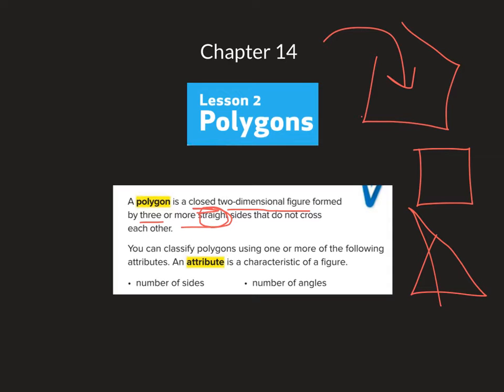You can classify polygons using one or more of the following attributes. So what's an attribute? An attribute is a characteristic of a figure. For example, if I said my hair is curly, that would be an attribute of myself. What are its defining characteristics? Those are attributes. We are going to look at number of sides, number of angles.